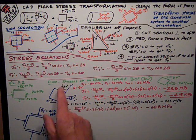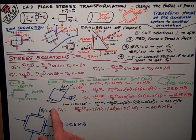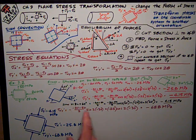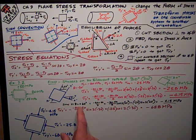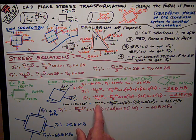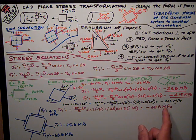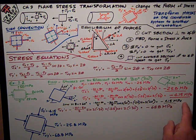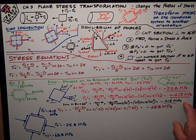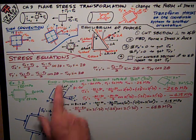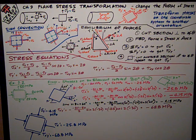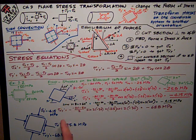Then this becomes sigma x prime in my equation because I'm using an angle of rotation of positive 60. Here's the numbers all written out, and lo and behold, I get the same answer, negative 4.15 megapascals, for the normal stress in that direction. Whether I call it y prime or x prime, it's the same number.